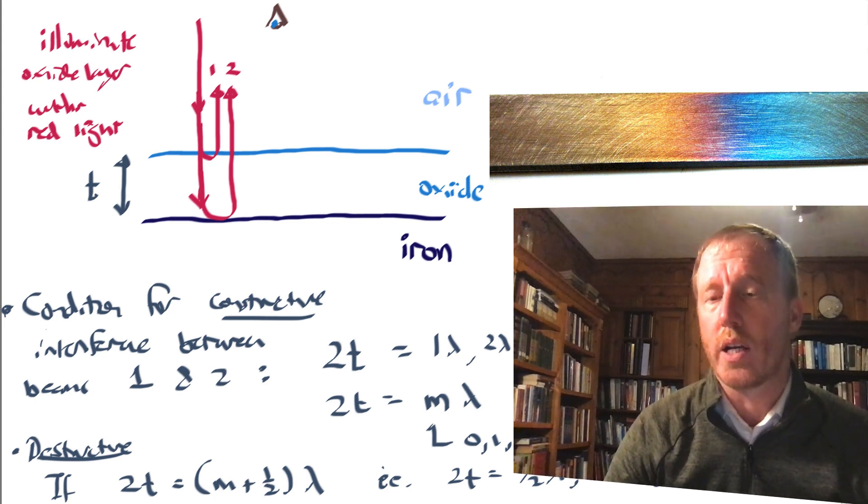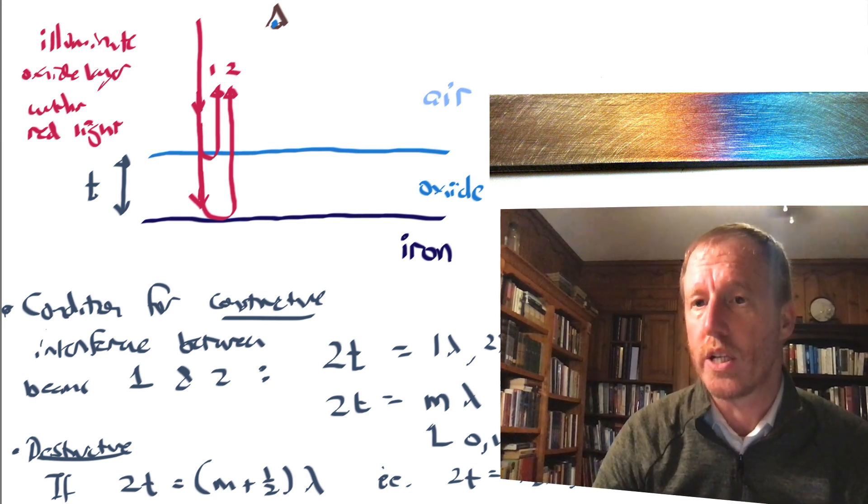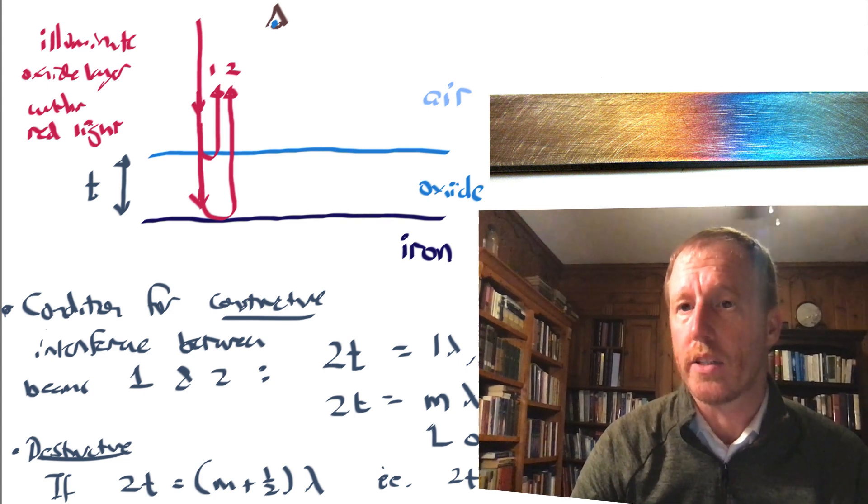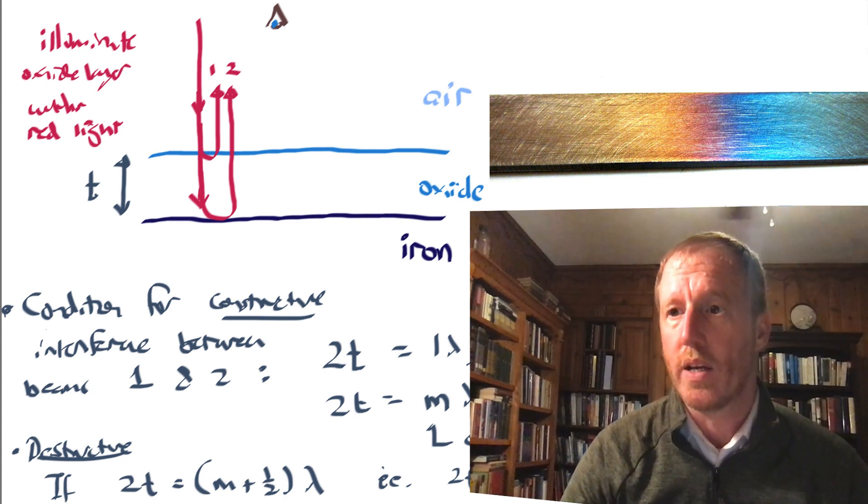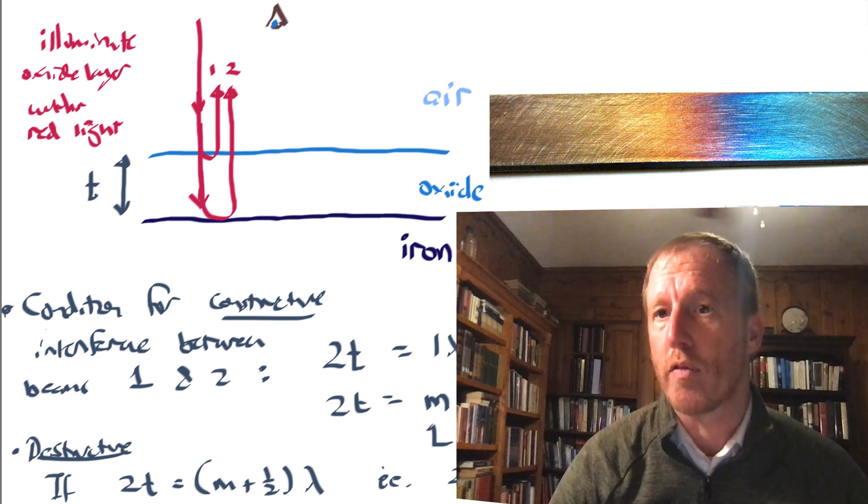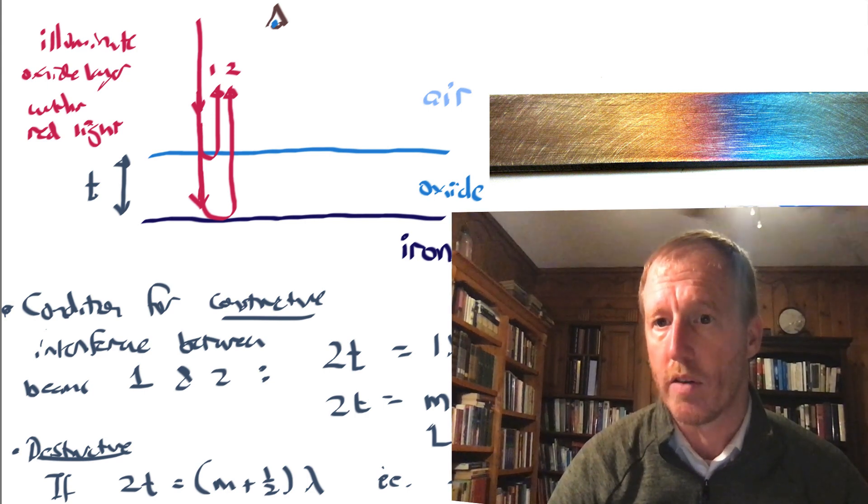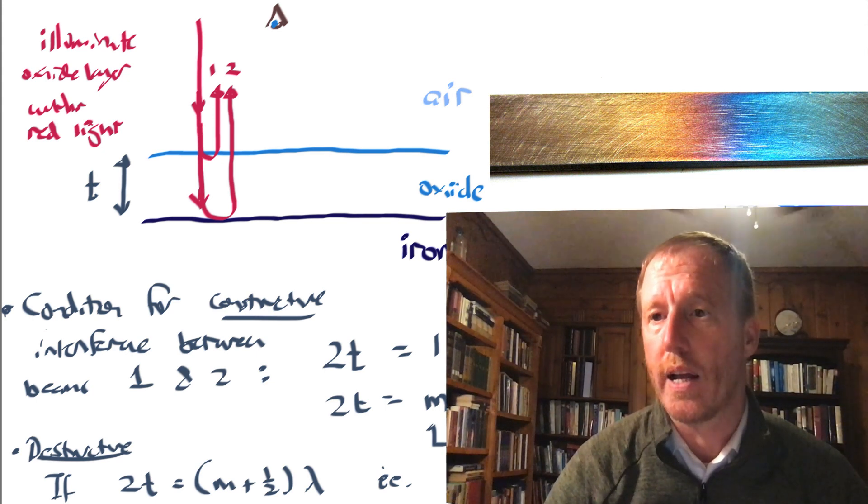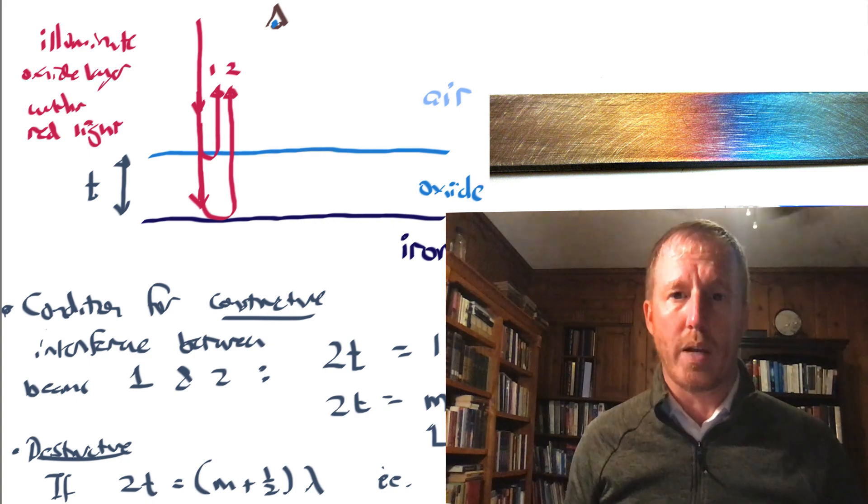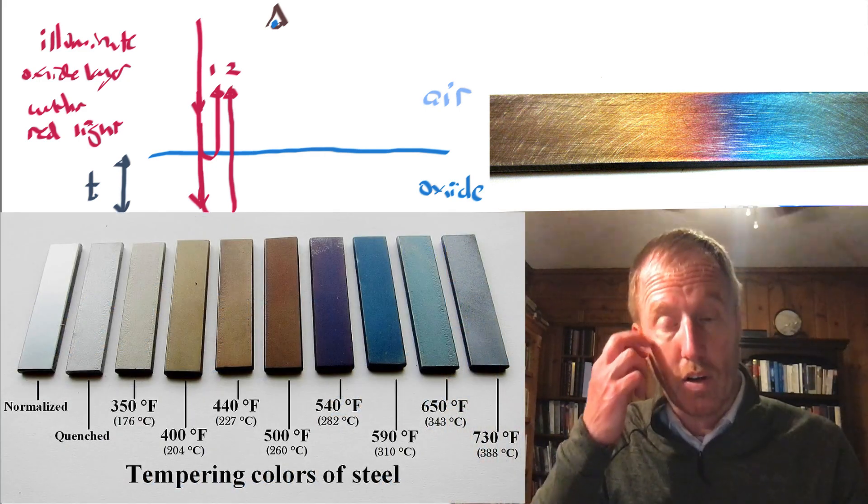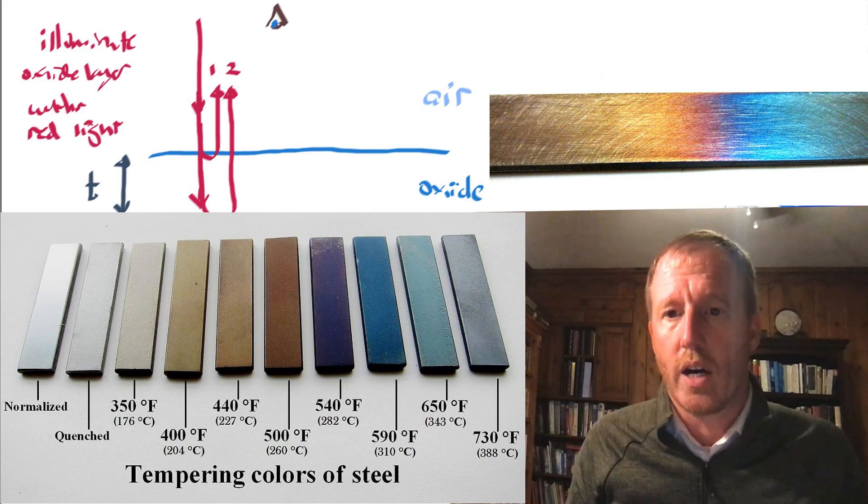He's saying, if you take a sheet of iron and you polish it and then you heat it, the thickness of the oxide layer is going to depend on the temperature to which you heat it. And as a result, the iron could appear different colors when viewed from above, depending on the temperature with which you heat it. I'll show some images here of iron heated to different temperatures, so there are different thicknesses of oxide layer on top of them.